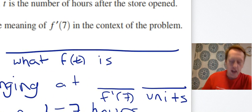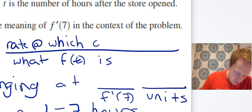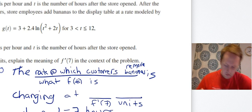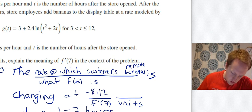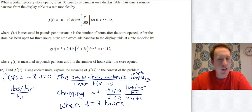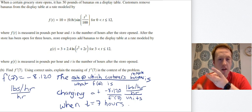F of T is the rate at which customers remove bananas. So the full explanation is: the rate at which customers remove bananas is changing at negative 8.120 pounds per hour per hour when T equals 7 hours. That's our full explanation using correct units. When talking about derivatives, say how something is changing, include the number with the unit, and state what time you're talking about.